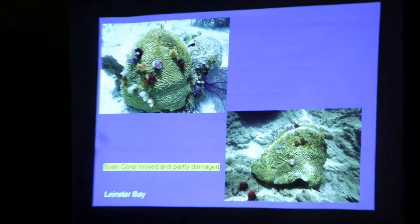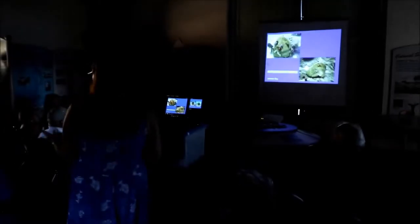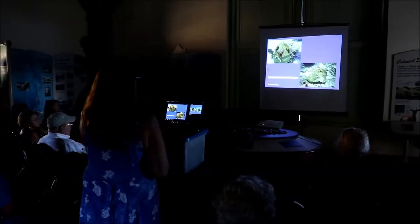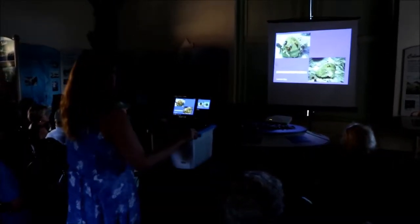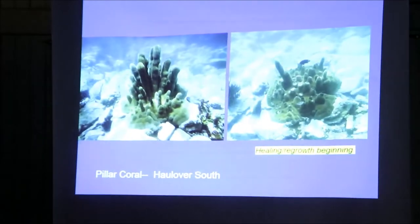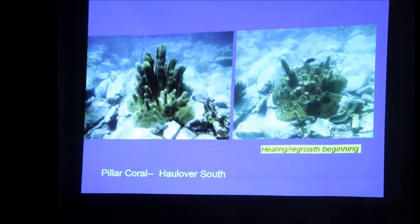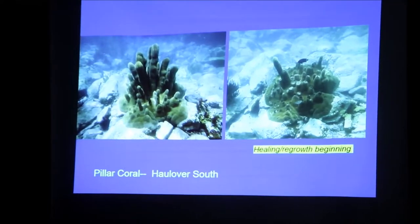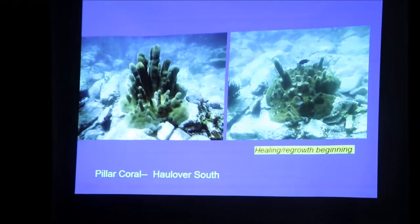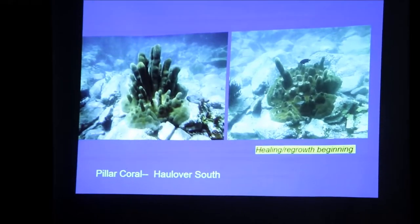Some corals were just moved around, they were detached. Another storm comes along and this coral can be flipped over, moved. I wouldn't expect it to survive. Another example of pillar coral, some of you actually know this beautiful colony. Almost all the columns were broken off, but there was some healing that has begun. Very slowly, but the corals that are still attached at the base really have a chance to keep growing.